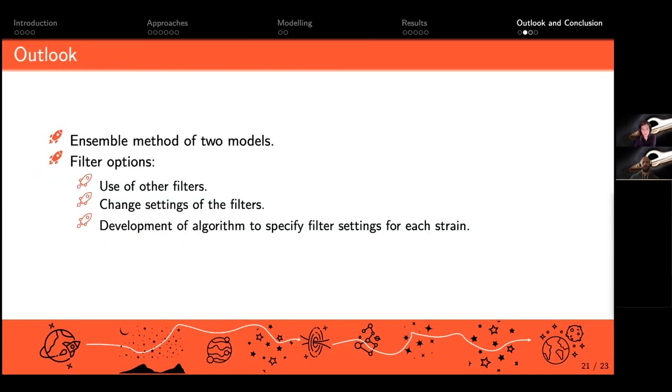We could still do an ensemble method of the two models, like the MFCC and the Q-transform. Since the results were shifted, this could give us a little bit more accuracy.